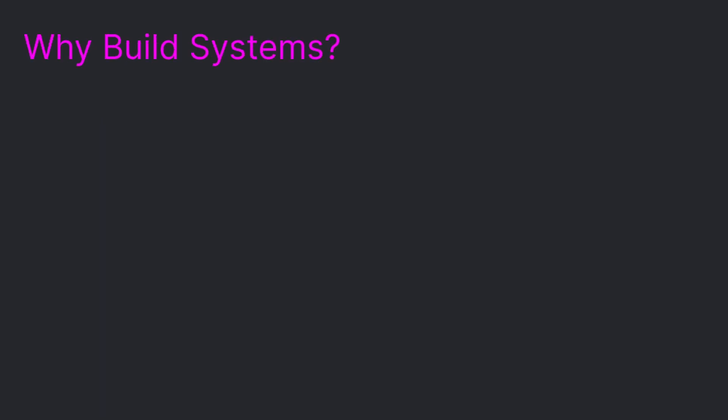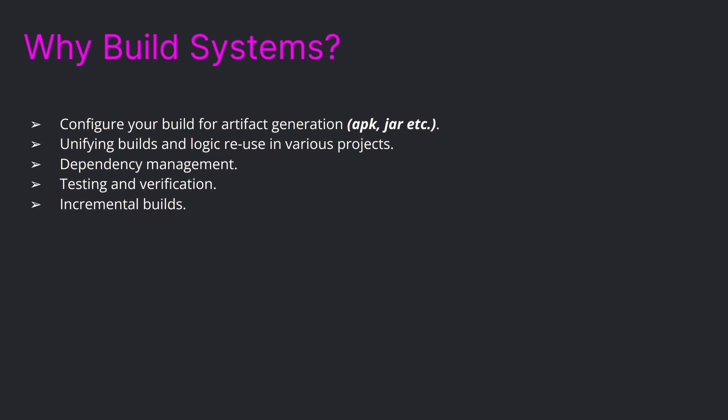Why do we have build systems? A build system serves several purposes. One is configuration of your build for artifact generation — this can be in the form of APKs or JAR files. A build system can also allow you to unify different builds and logic across various projects, and it can be used for dependency management, testing and verification, and incremental builds.